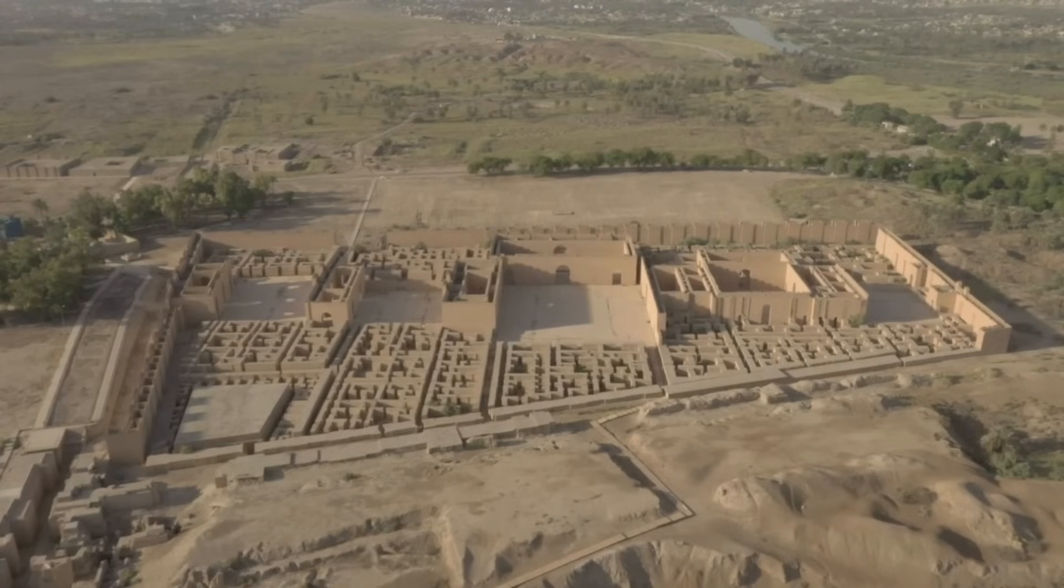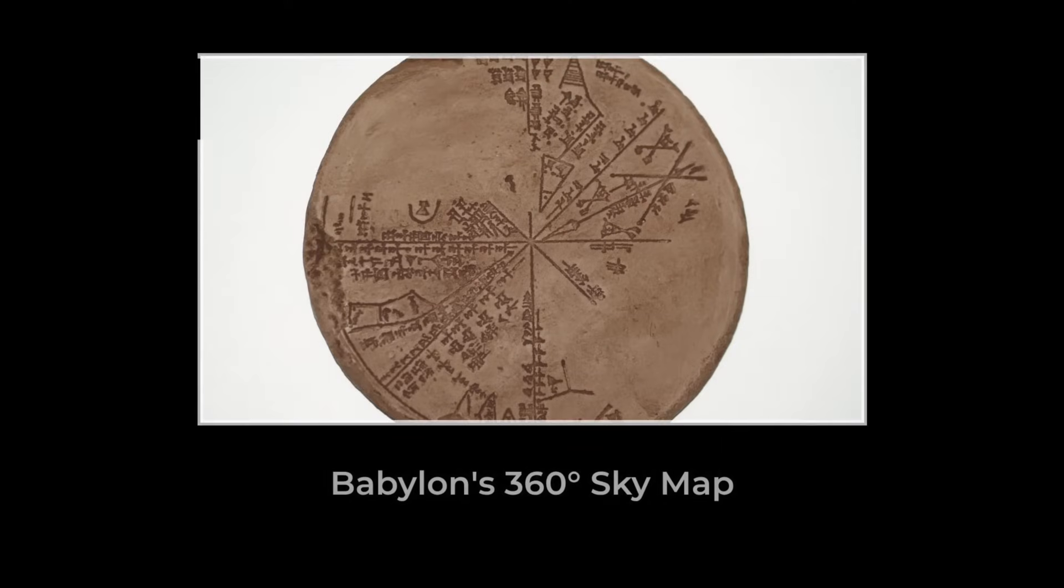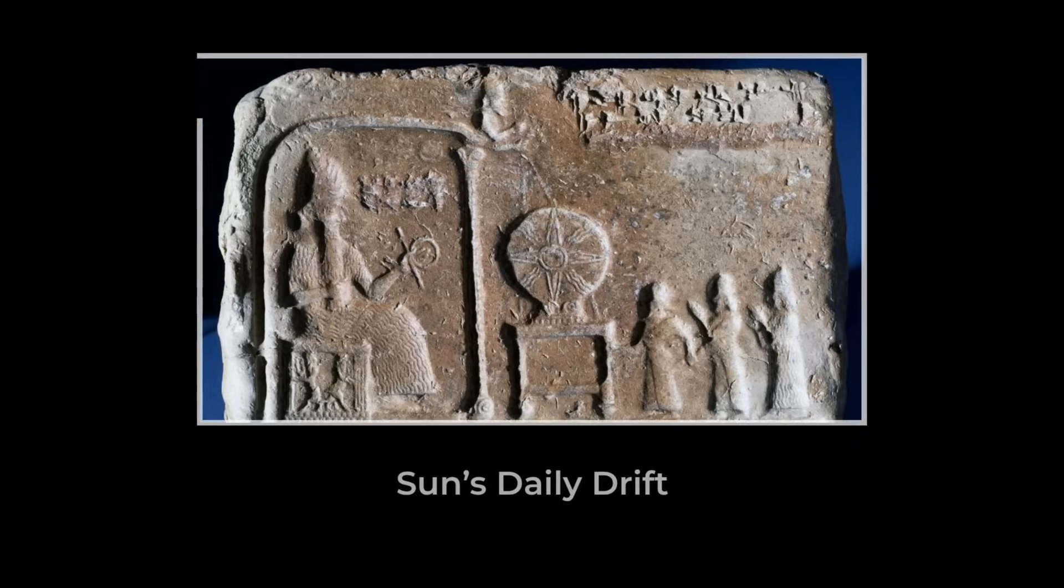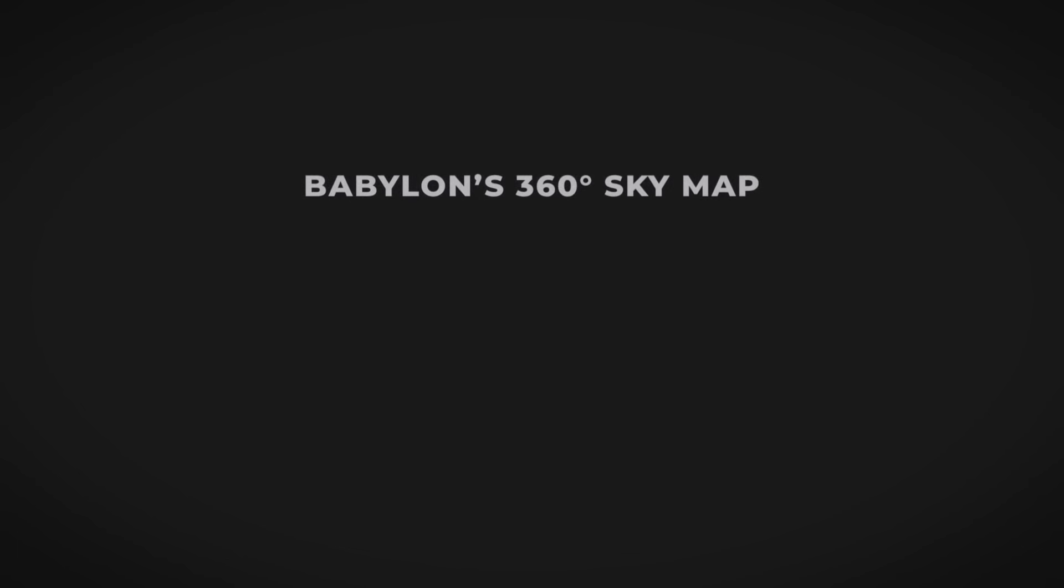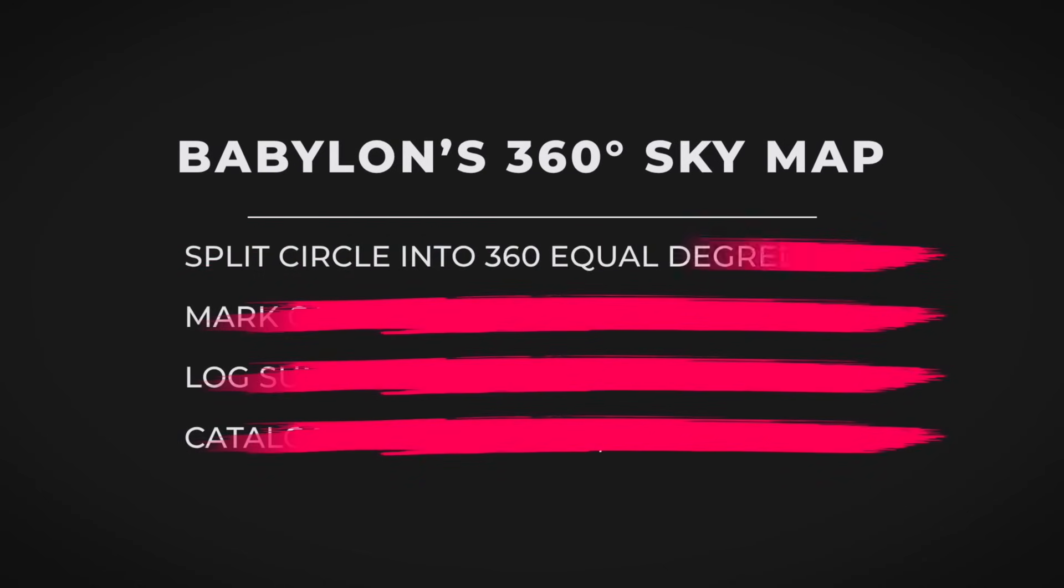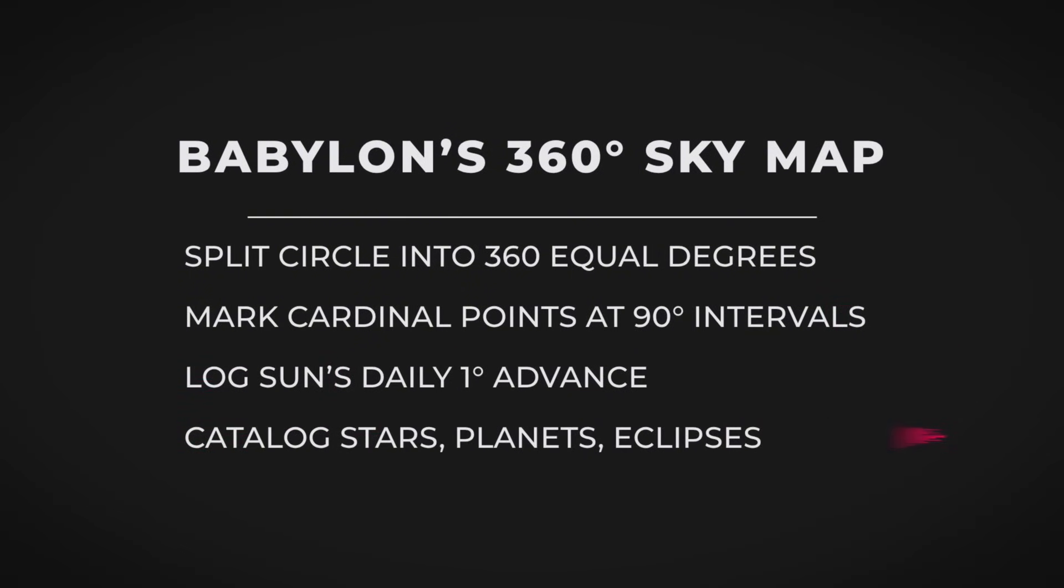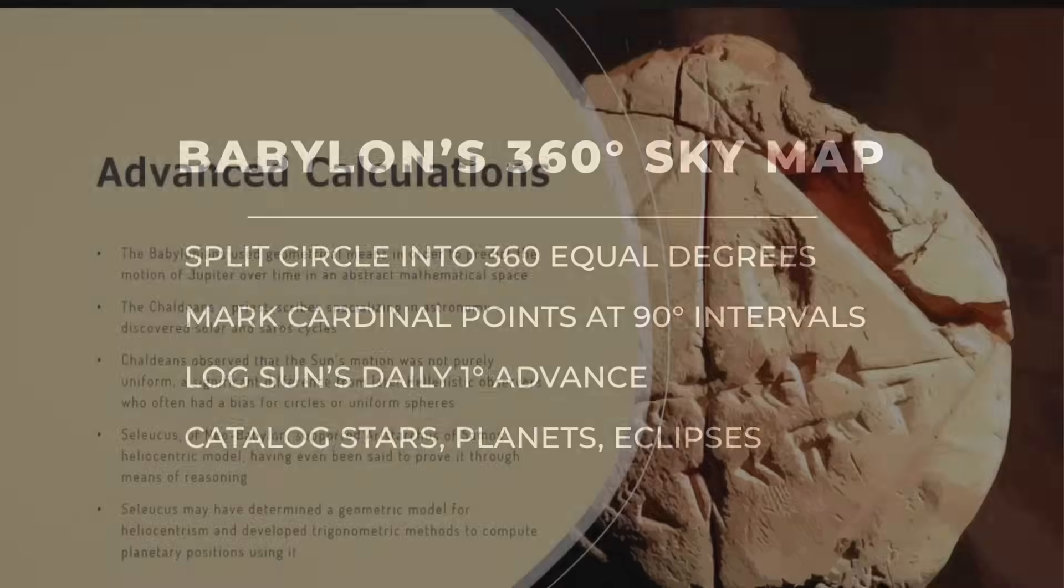This wasn't just a neat trick for parties. Babylonian sky watchers tracked the movement of the sun, the moon, and the planets across this 360-degree grid. Each day, the sun would travel about one degree along its path. Recording the position of a star or planet became as easy as pointing to a spot on the circle.